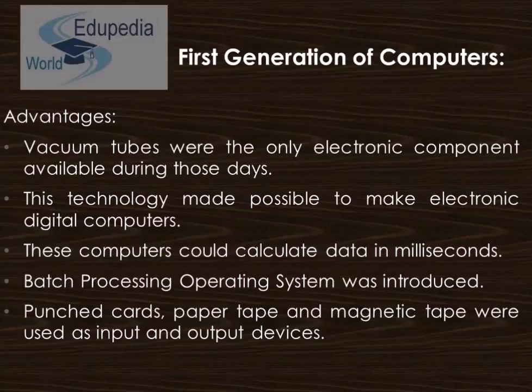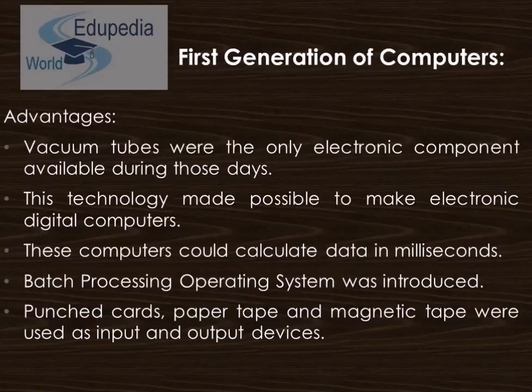The features include vacuum tubes as the only electronic components available during those days. The technology made it possible to make electronic digital computers. These computers could calculate data in milliseconds. Batch processing operating system was introduced, and as peripheral input and output devices, punched cards, paper tapes, and magnetic tapes were introduced.